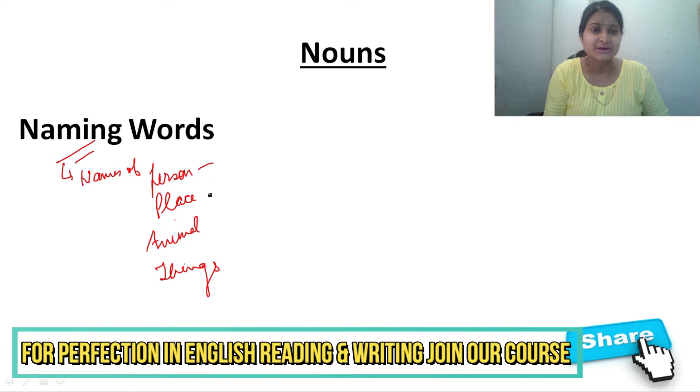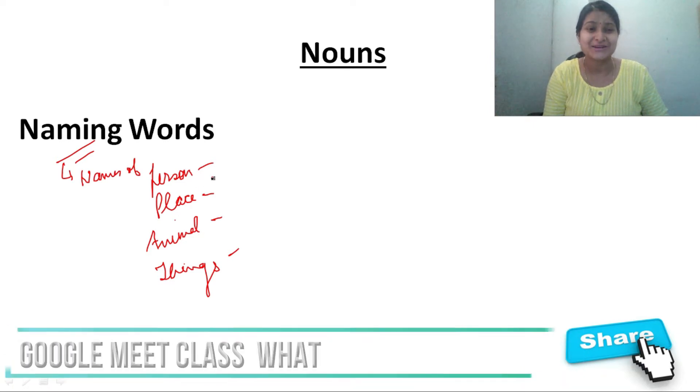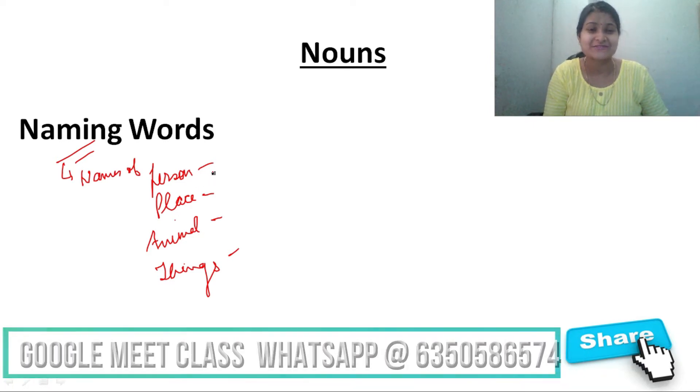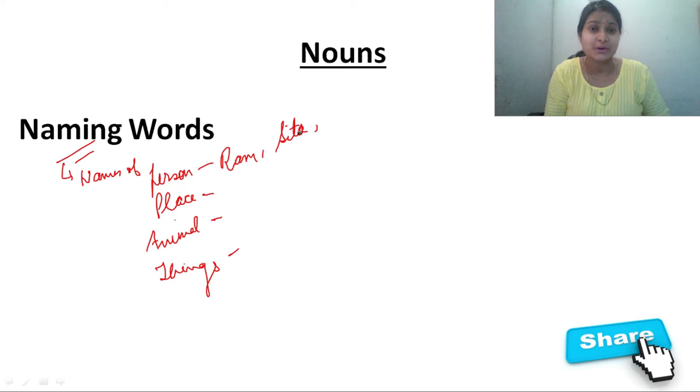Shall we give some examples? So we are going to learn this with the help of examples. This will make the video more interactive and more easy to understand. Name of person, you can say Ram, Sita. These are the names of person. You can also say teacher. It is also a name of person.